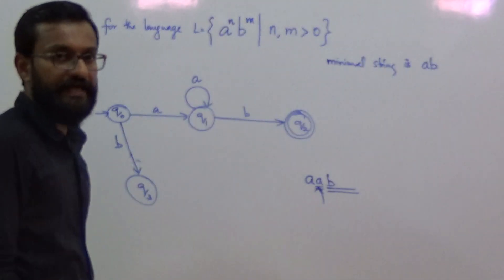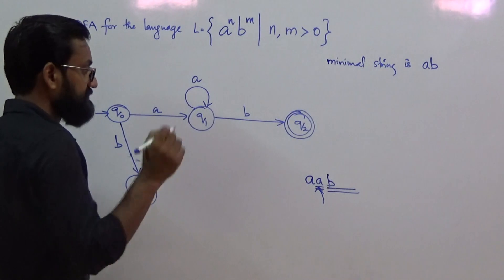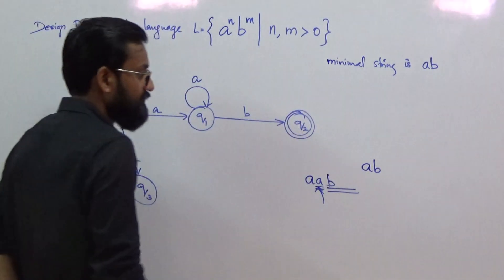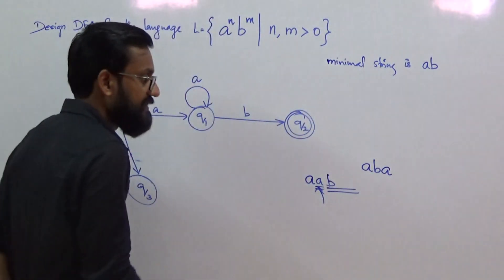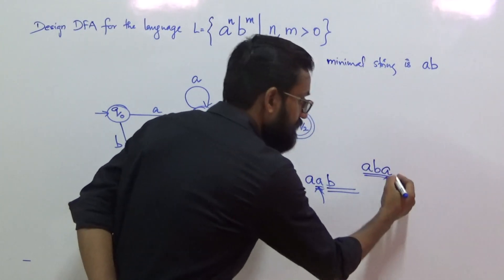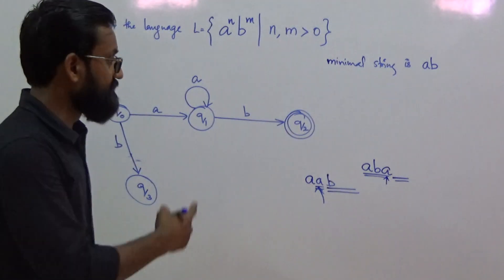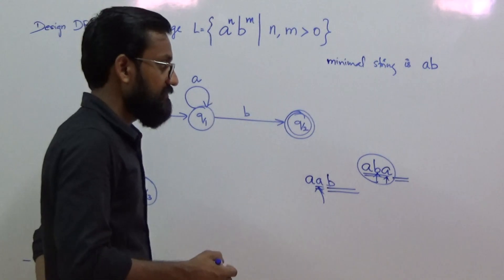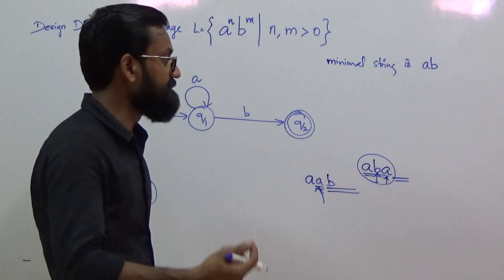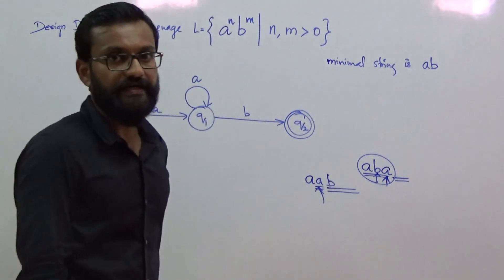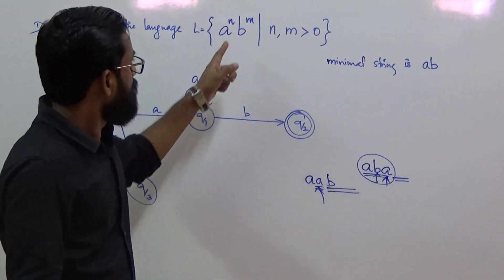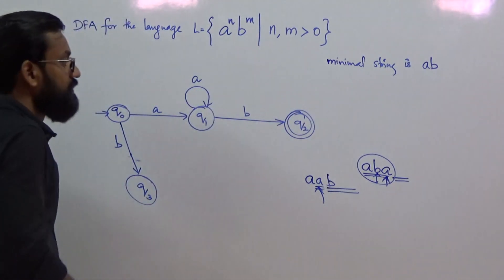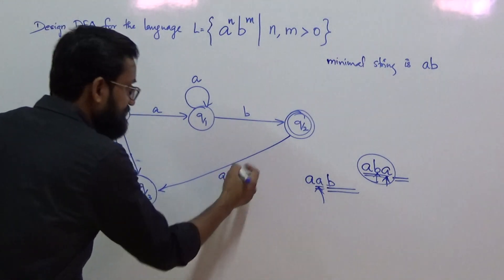Now apply A and B transitions to state q2. For the A transition: the minimal string to reach q2 from q0 is AB. Now applying A, the current string is ABA. This string is already invalid because once the machine starts reading B, it is not allowed to read A — all A's must precede the first B, and B cannot be followed by A. So from q2, the A transition also goes to the trap state.